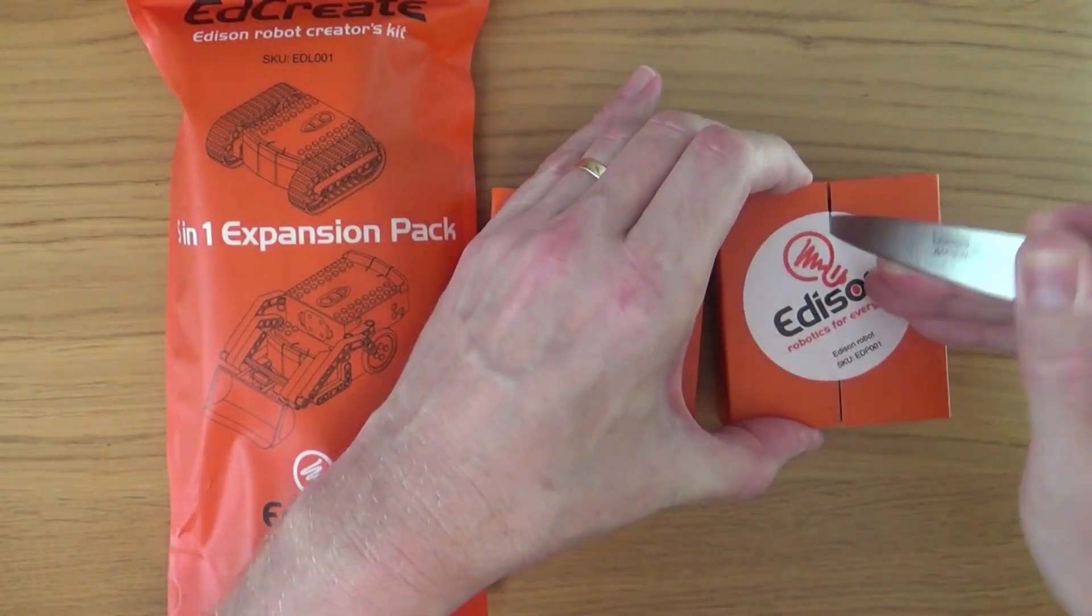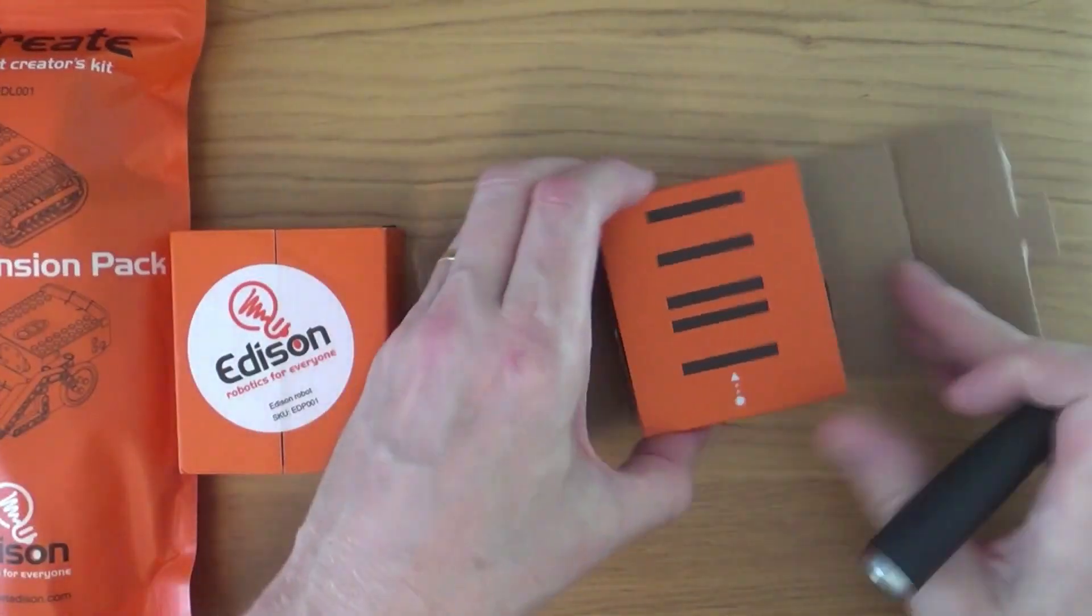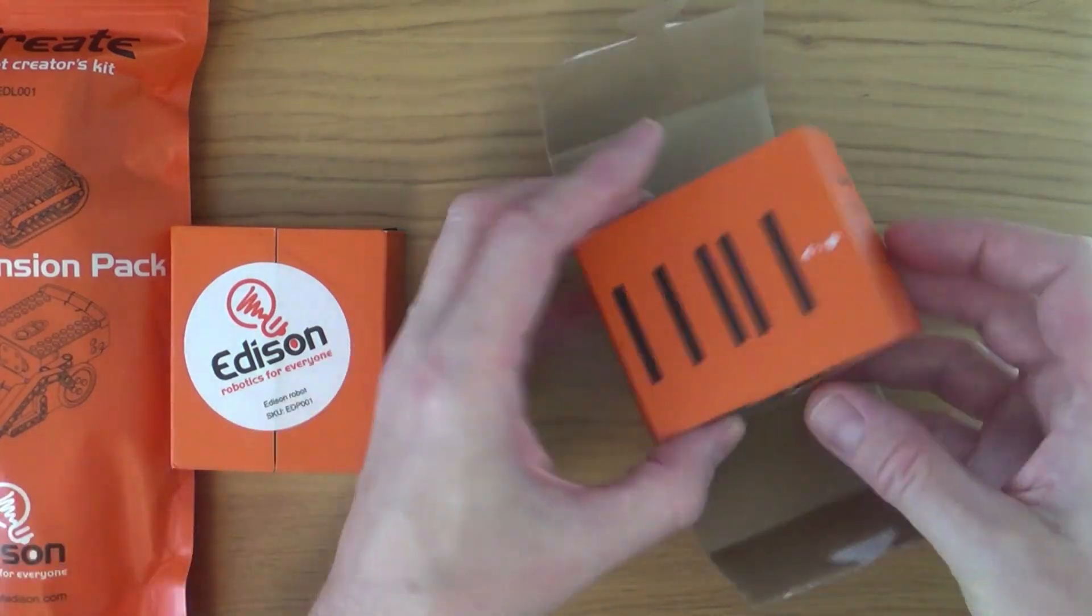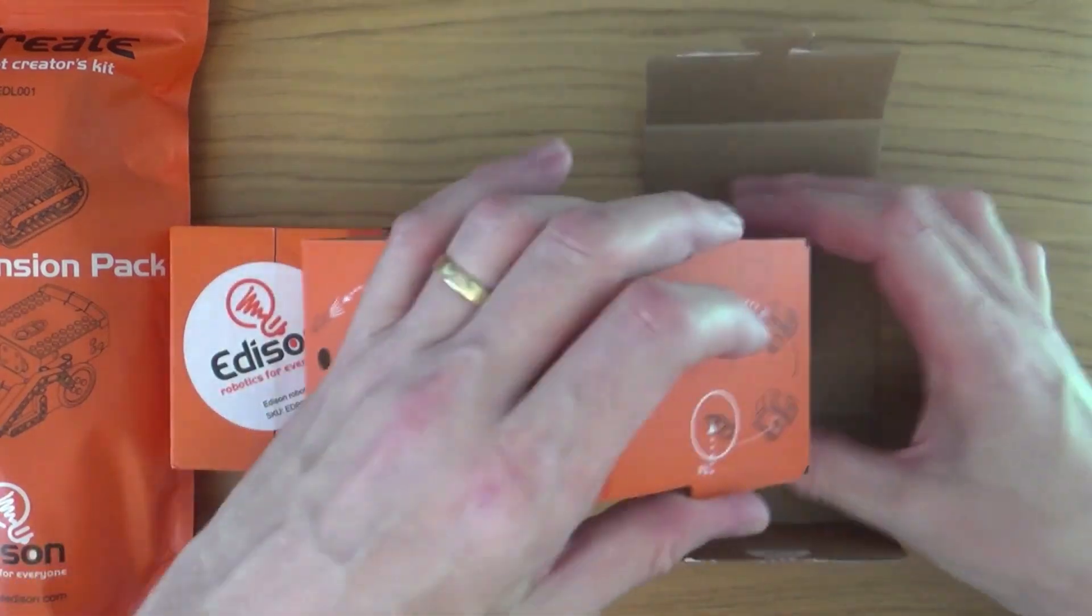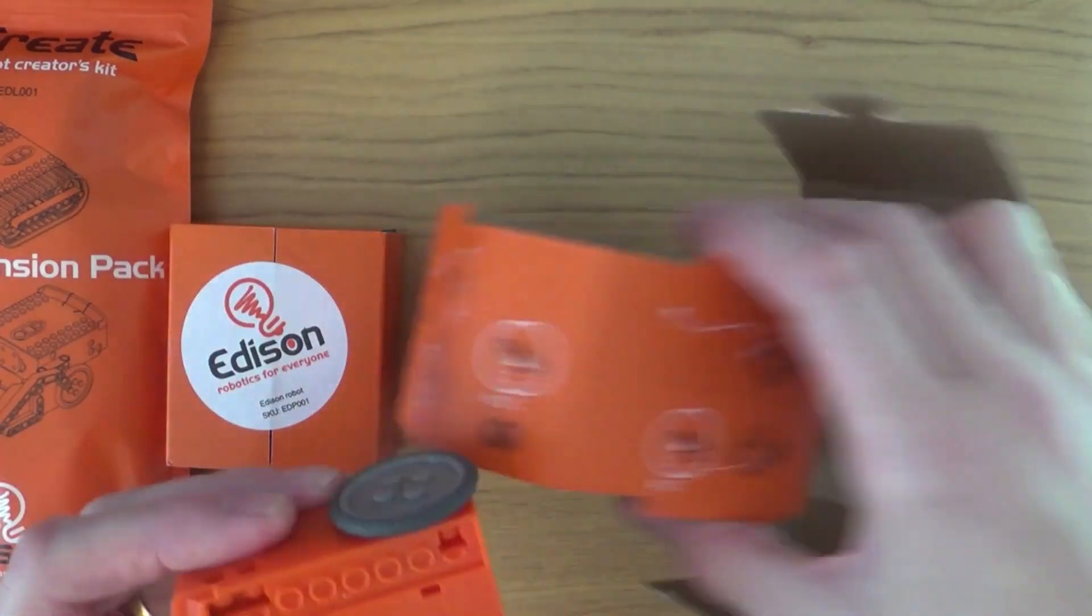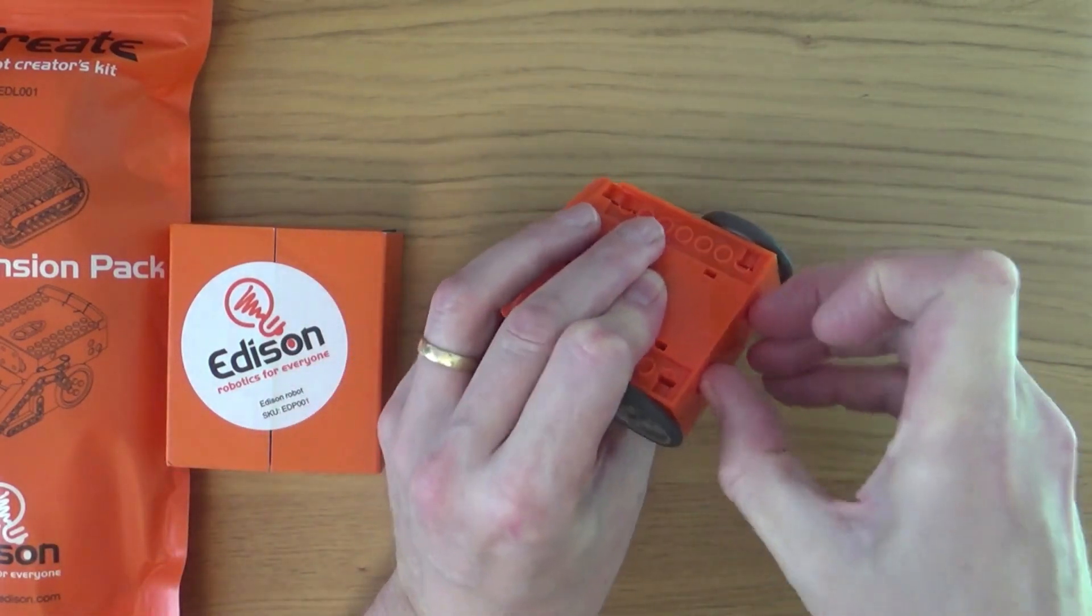Now this is a quick unboxing, because inside each box we just have an Edison robot, and inside the battery compartment there's an EdCom cable. That's the cable that connects to your computer when you want to program Edison.